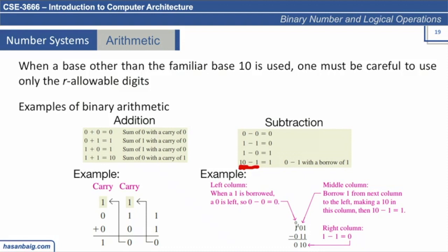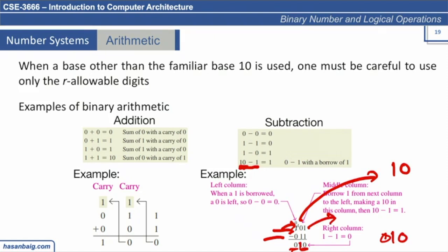Here is an example: 101 minus 011. One minus one is zero. You cannot subtract one from zero, so you have to borrow. When we borrow, '10' corresponds to two; two minus one is one. Since we borrowed one from that position, it becomes zero. The answer is 010, which equals two. The actual values were 101 which is five, and 011 which is three, and five minus three is two.